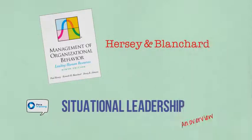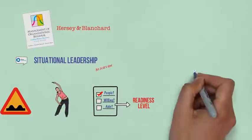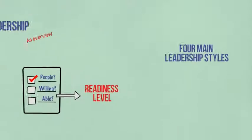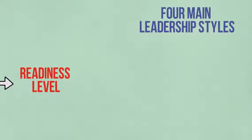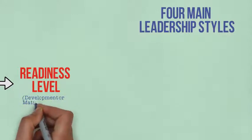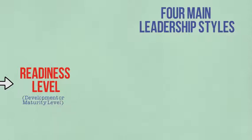Paul Hersey and Ken Blanchard developed a model identifying four main leadership styles. These can be adopted according to the perceived readiness level, also known as the development or maturity level, of the person to be led or managed in the task in order to get the best results.